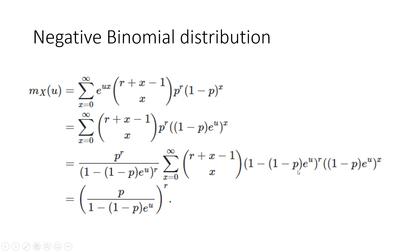So when you pull out this term, you get p^r over (1-(1-p)e^u)^r. Once you pull this out, then you can see that the remaining terms sum to 1. By definition, if you forget about the exponential ux term and only sum the remaining terms, it becomes 1, because it's a probability distribution.